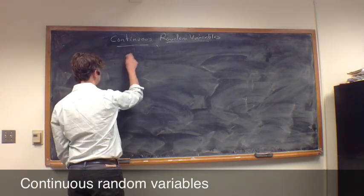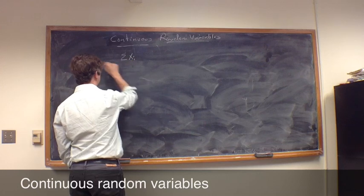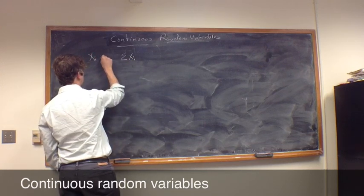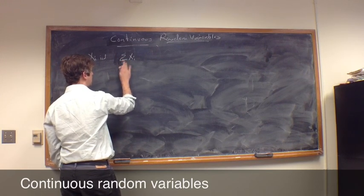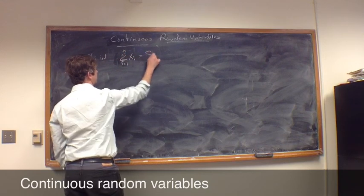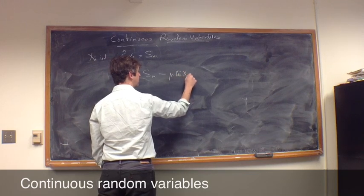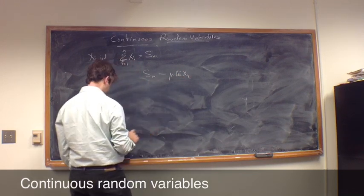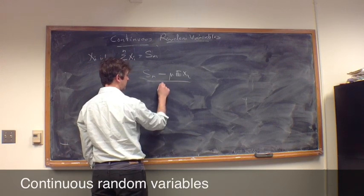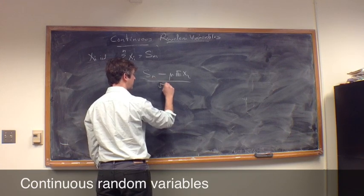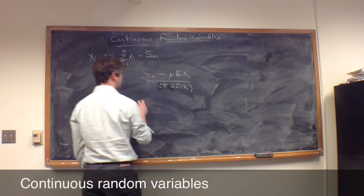So when we've said that a sum of independent random variables, let's say the xi are iid, we've seen that this sum i equals one to n, which is called Sn, we've seen that Sn minus mu times the expected value of one of the xi, that this converges, and if we normalize it by the standard deviation, so square root of n times the standard deviation of xi, we've seen that this probability.